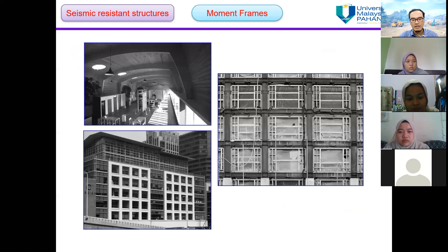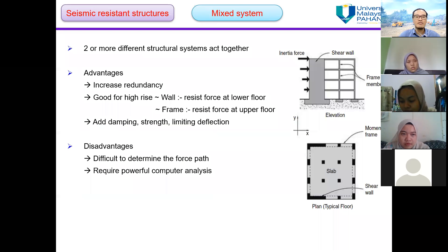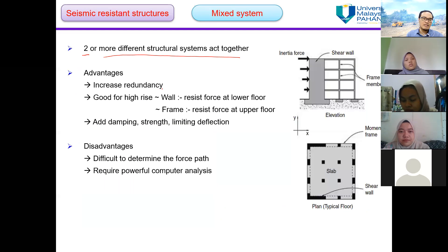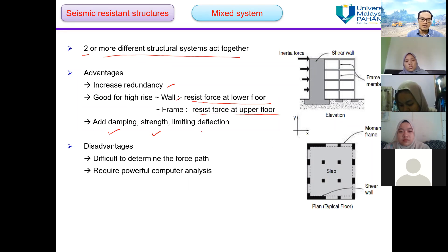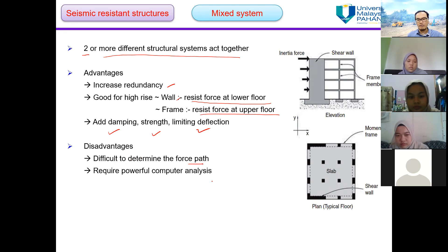Mixed or dual systems use two or more different structural systems acting together. The advantages are increased redundancy — suitable for high-rise buildings where the wall resists force at lower floors and the frame resists force at upper floors, adding damping and limiting deflection. The disadvantage is that it is difficult to determine the force path and requires powerful computer analysis. When we have both a wall and a frame member together, we call it a mixed or dual system.